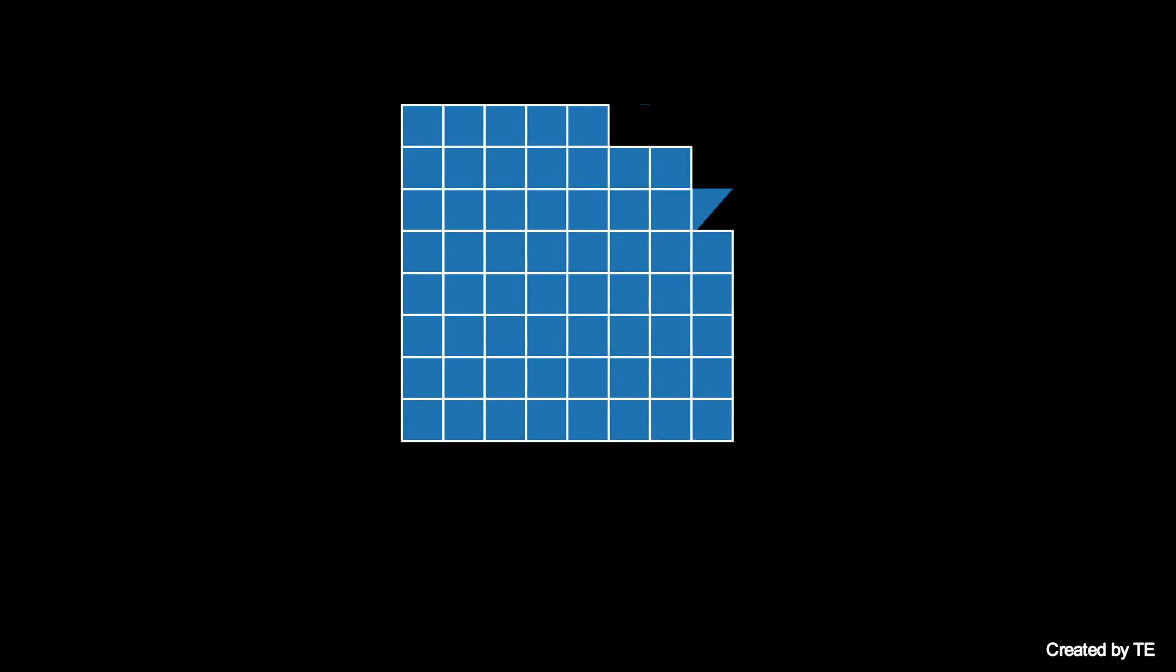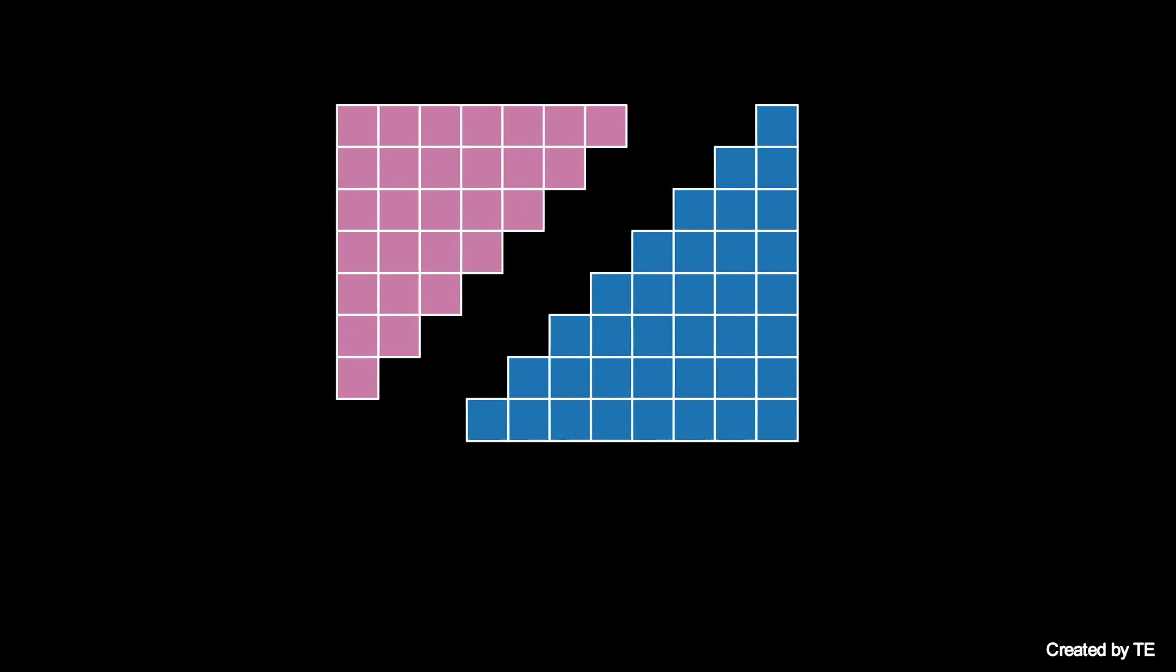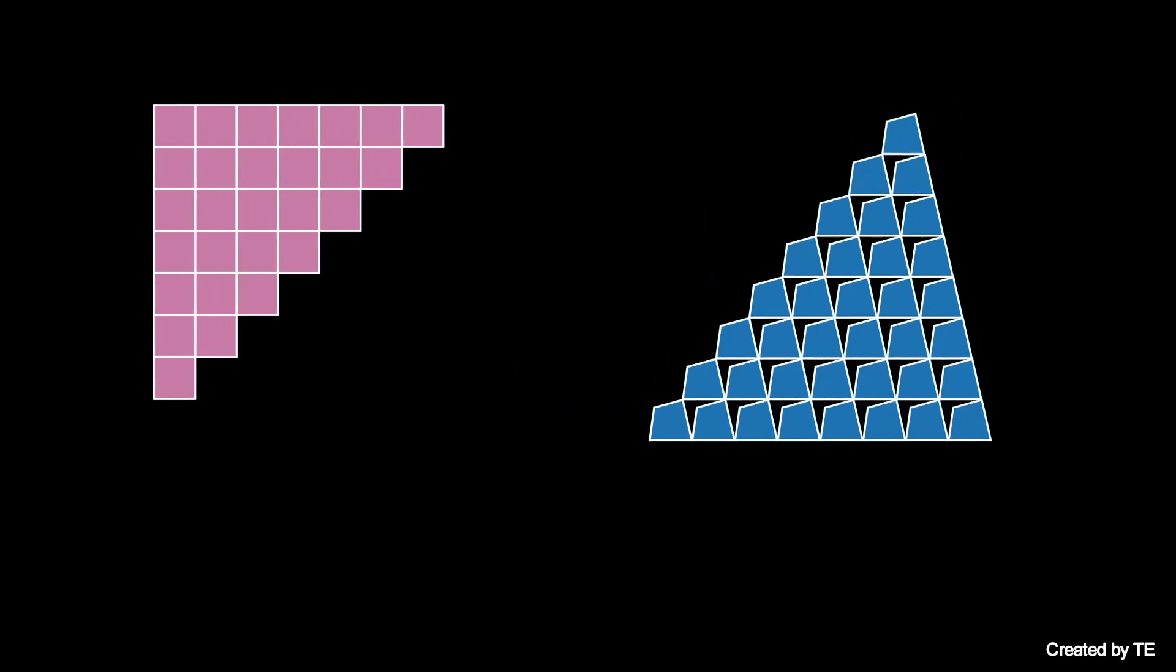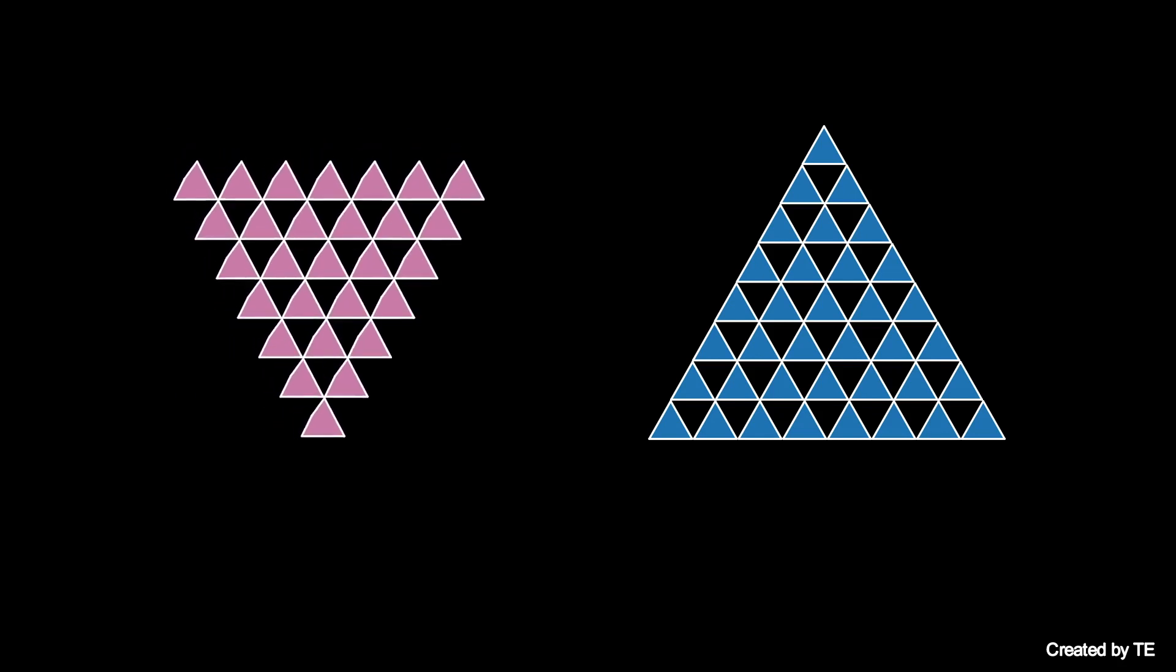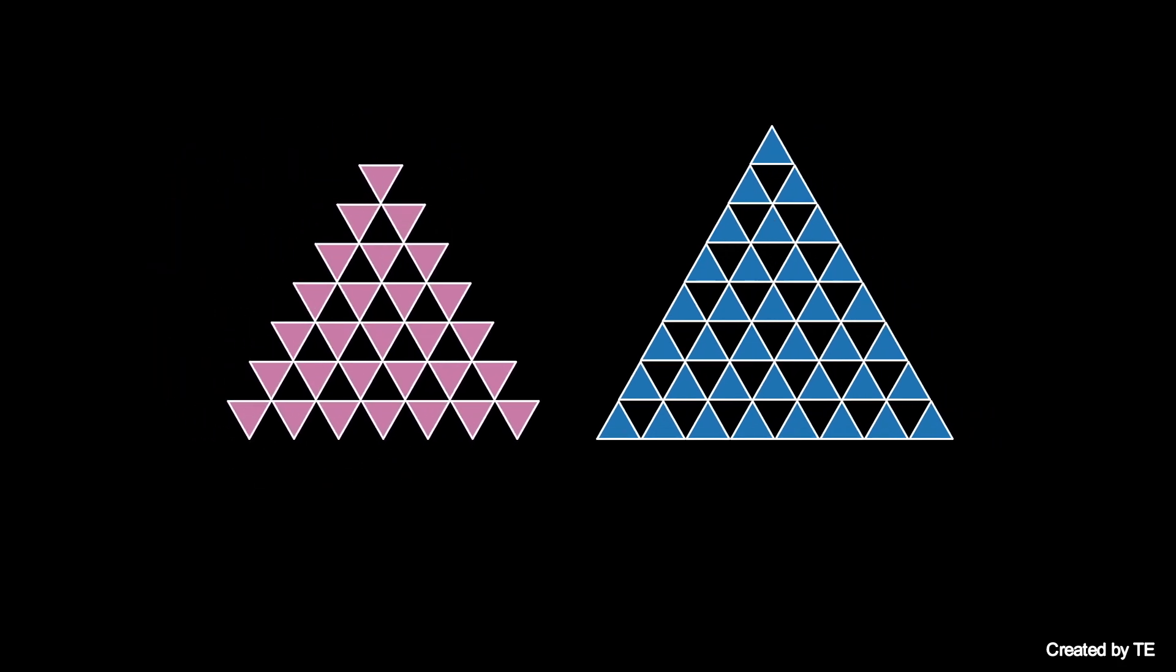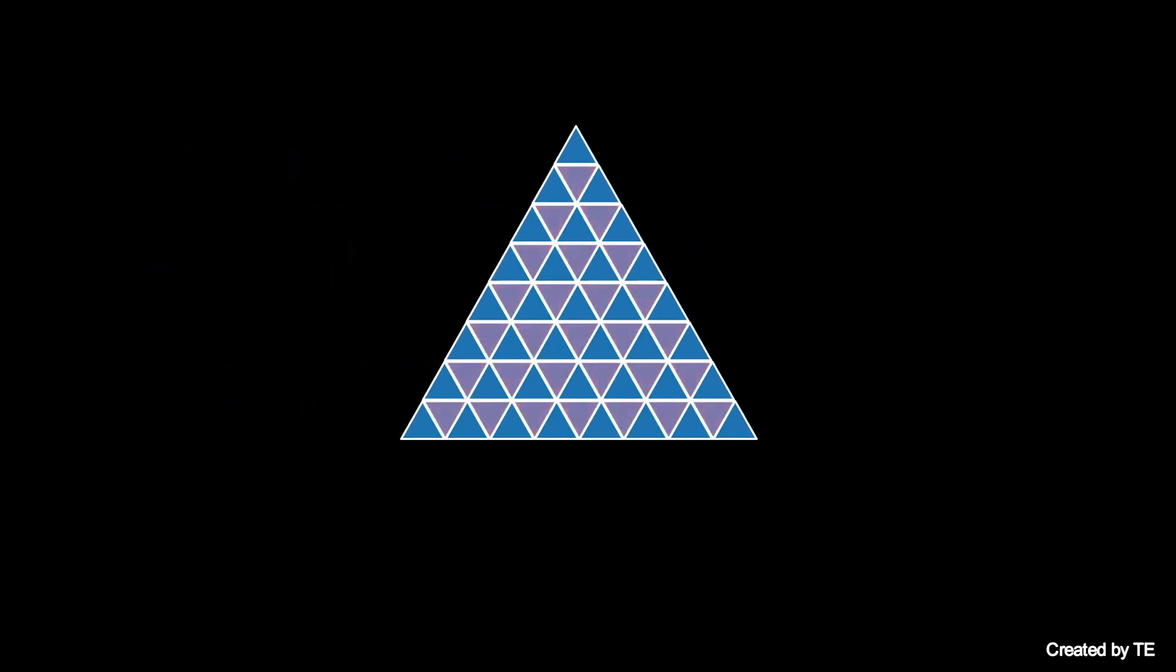To make sense of this visual proof, we first need to see that the number n squared, which is typically represented by a square array, can be decomposed into two triangular arrays with bases differing by one. And these arrays can be morphed into arrays of triangles that fit together like this to form a triangular tiling of an equilateral triangle by equilateral triangles, so each square can be visualized this way.